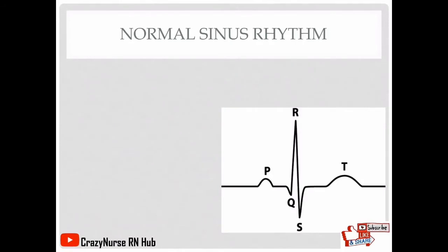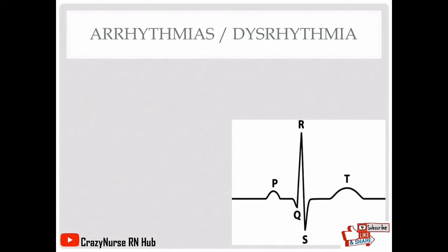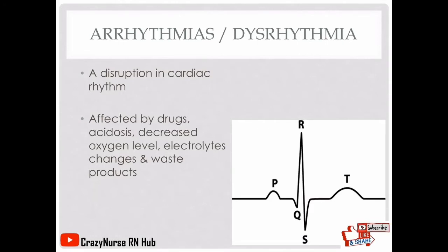Now we have the normal sinus rhythm. An ECG interpretation of normal sinus rhythm indicates a normal ECG pattern and a heart rate within normal range for that person's age group — for adults, 60 to 100 beats per minute. We also have arrhythmias, or dysrhythmias, which is a disruption in cardiac rhythm. It can be affected by drugs, acidosis, decreased oxygen level, electrolyte imbalances, and waste products.